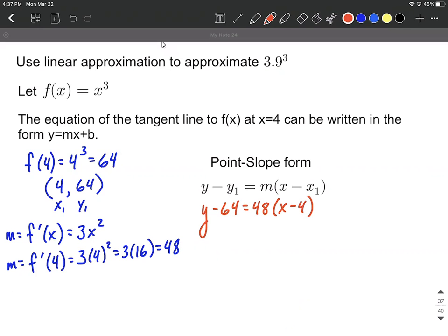We are asked to get this in the form y equals mx plus b. So what we're going to have to do is a little bit of distributing and also move the 64 to the other side. So with this I'll bring down the 64 initially. Distribute the 48. So 48 multiplied by x and then 48 multiplied by negative 4 is going to be negative 192.